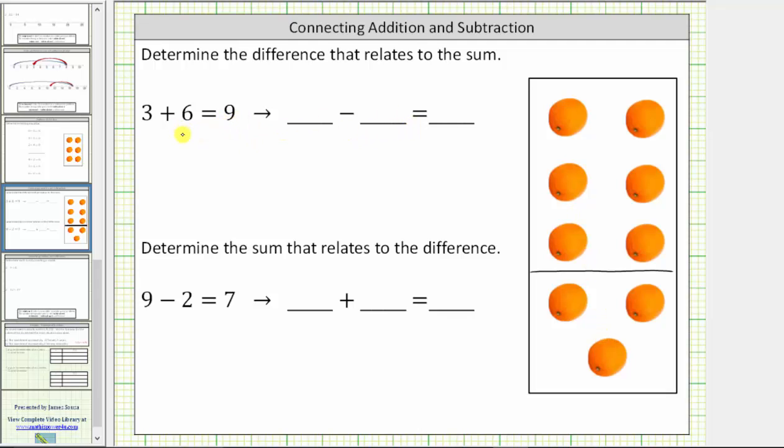To write the difference that relates to this sum, we begin with the sum of nine. And then for the sum, notice how we added six. And therefore, for the difference, we will subtract six.